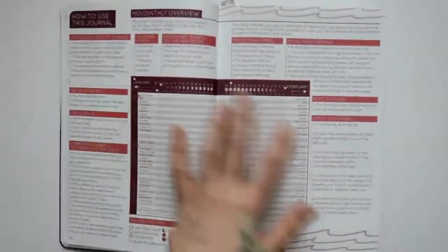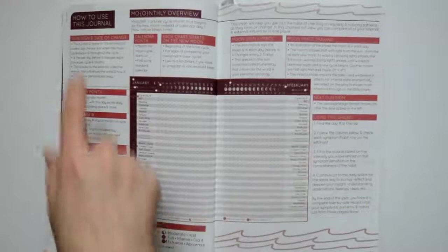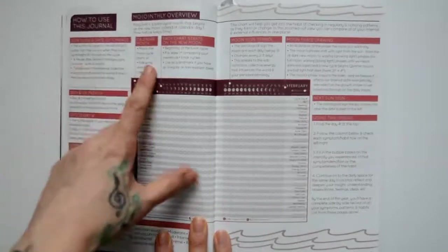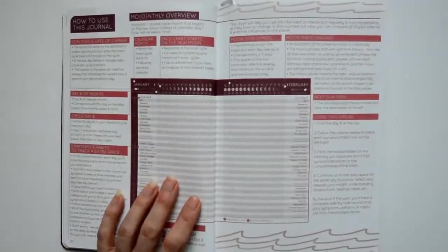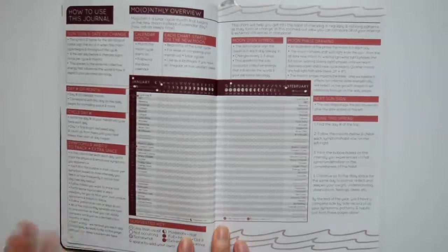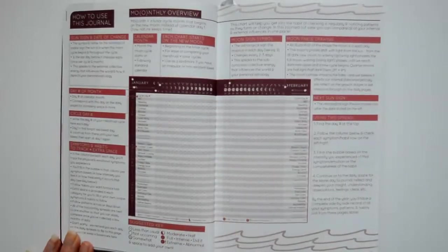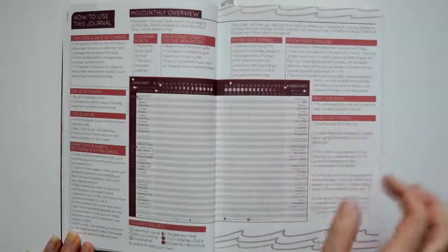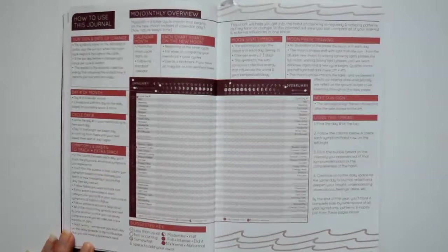There's a section here on how to use this journal. There's a lot of parts to it, a lot of things to write down. So there's all these different sections here. They give you the sun sign, the calendar month. Each chart starts on the new moon, which I just love because I am really into the moon cycles. I wish that we could start each month on the new moon. There's moon sign symbol, moon phase drawing, next sun sign, using this spread, day of the month, cycle day, symptoms and habits to track. It's got everything.